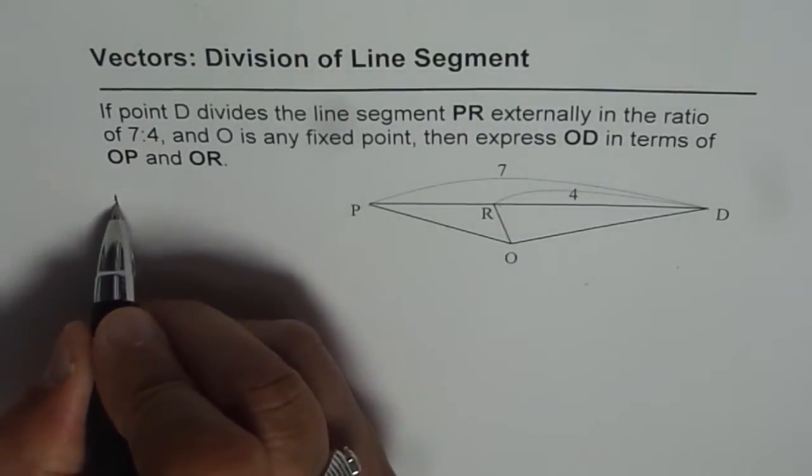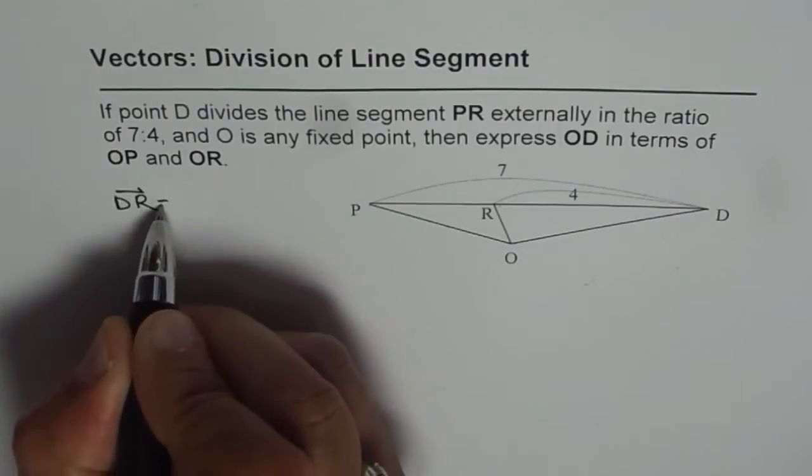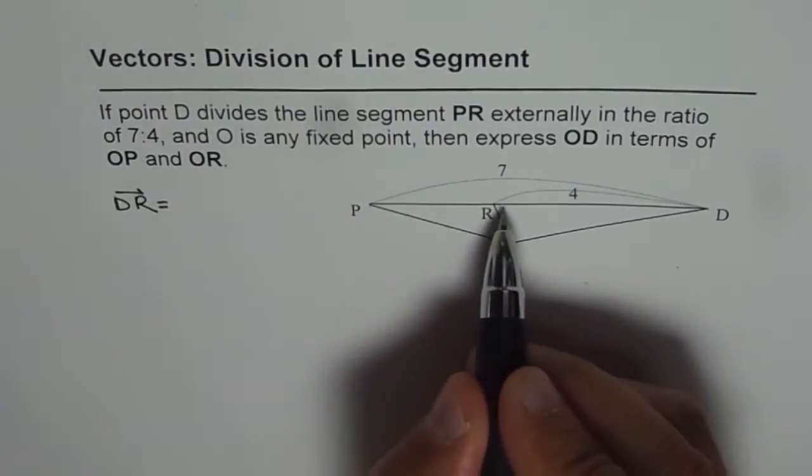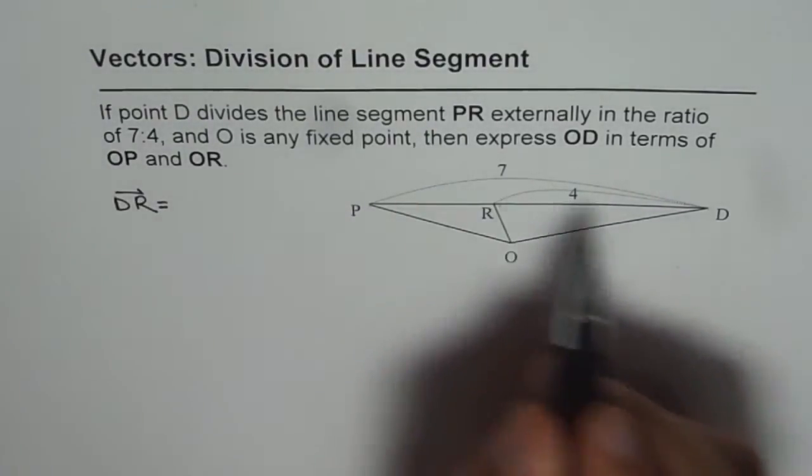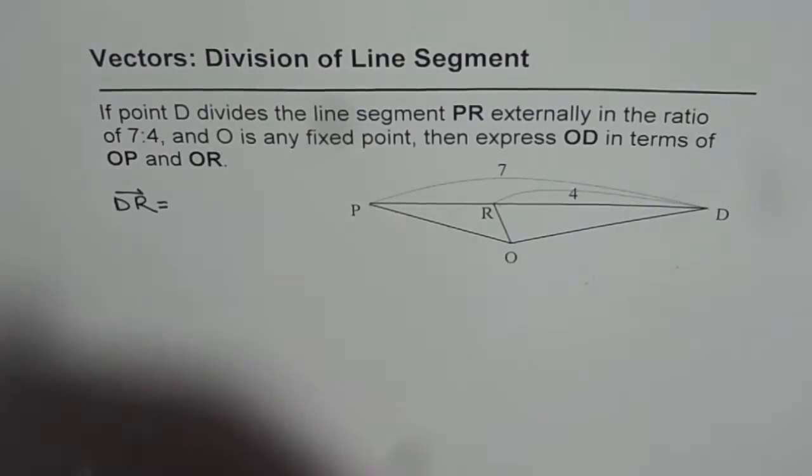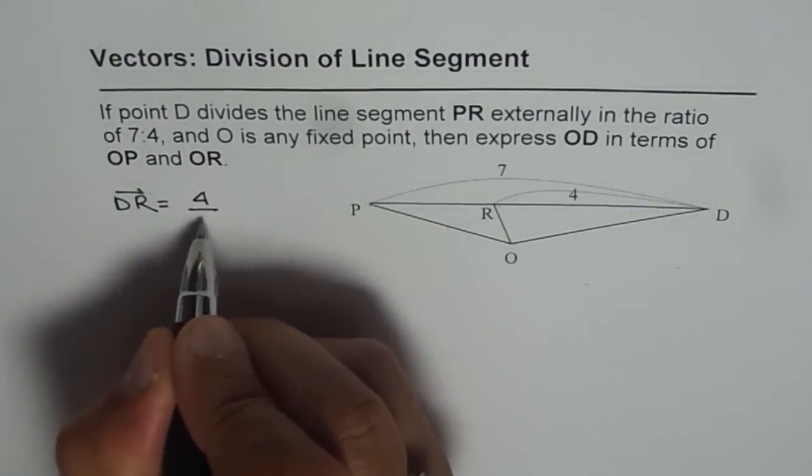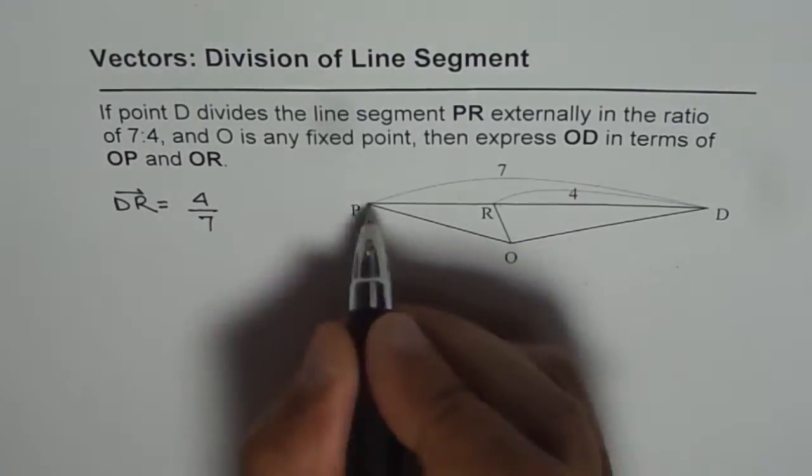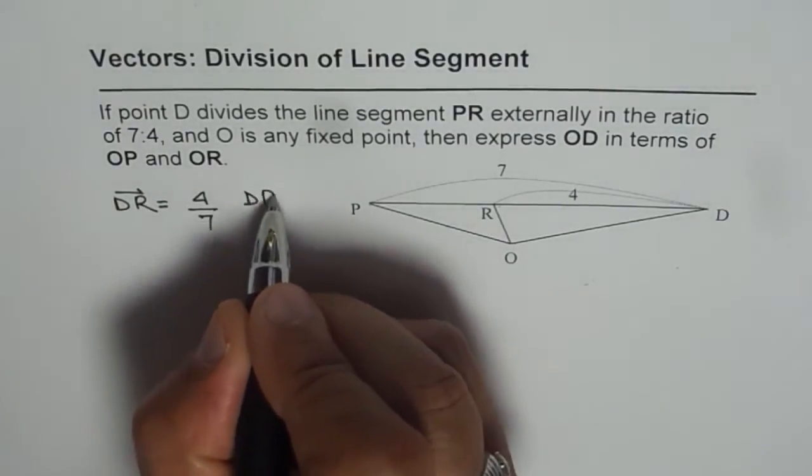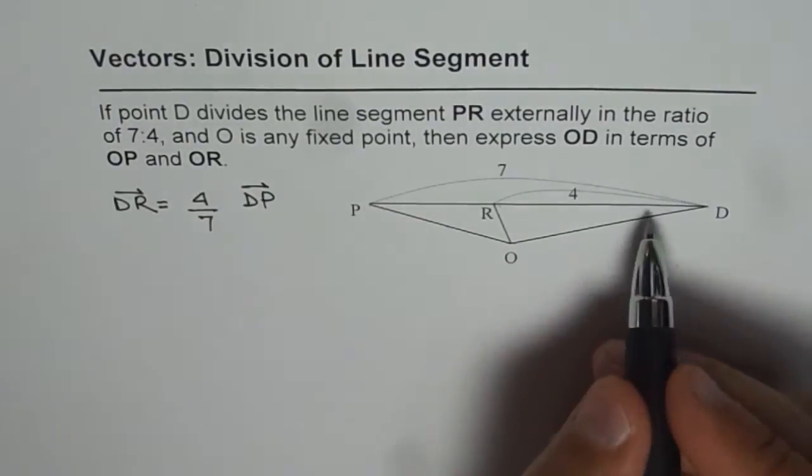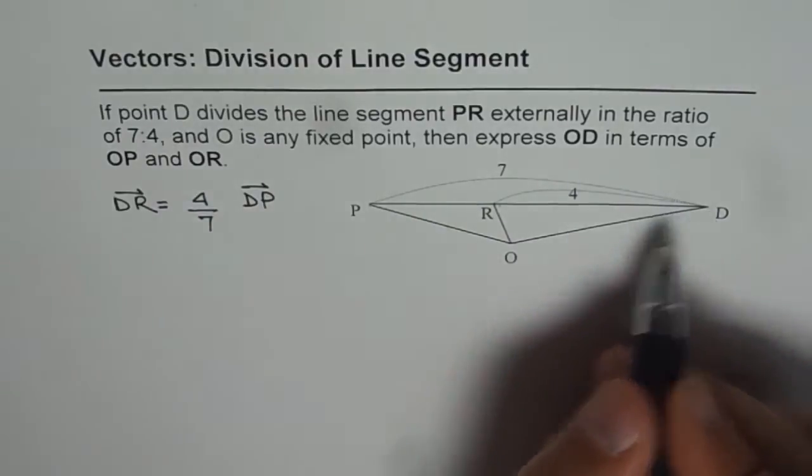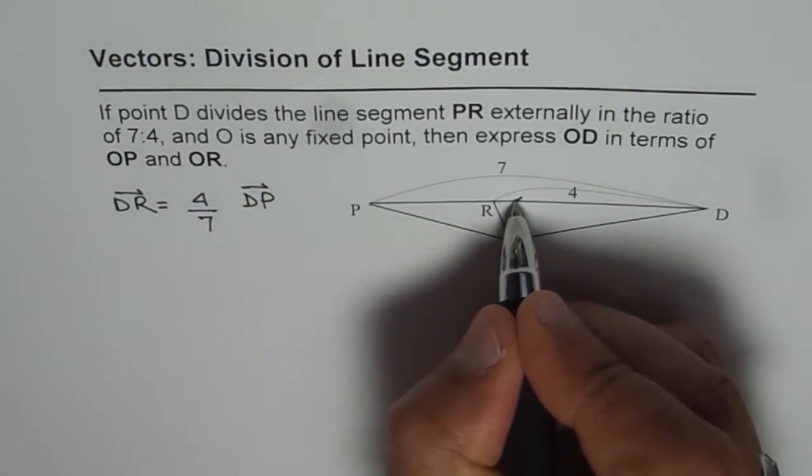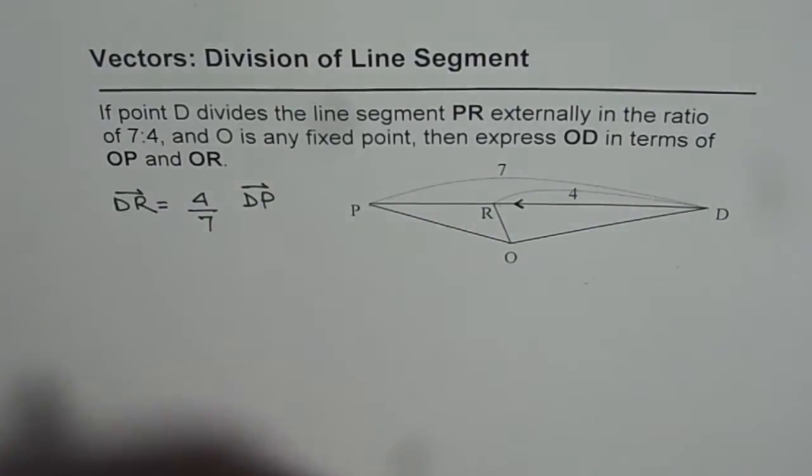we can write DR is equal to - now DR is 4 over 7 of DP, correct? So, we can write this as 4 over 7 of DP, correct? Since this is 4 units and total is 7 units and vector we are considering in this direction.